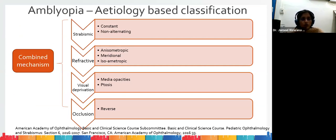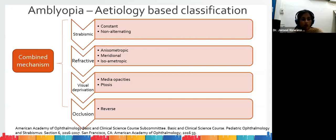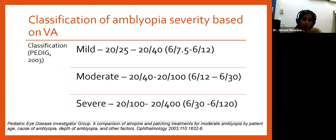Based on etiology, amblyopia is classified as: strabismic (when strabismus is constant and non-alternating); refractive — subdivided into anisometropic (interocular difference greater than 1.5 diopters), meridional (astigmatic component), or isometropic (bilateral high refractive error); visual deprivation due to organic pathologies like congenital cataract or ptosis; occlusion amblyopia (where the good eye develops amblyopia during patching); and combined mechanism amblyopia when more than one etiology is present.